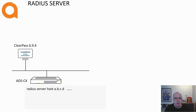If you want to use downloadable user roles with dynamic segmentation, you need a root certificate installed on the switch. Typically in root certificates, the FQDN is used instead of an IP address.